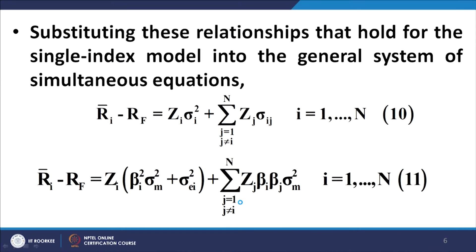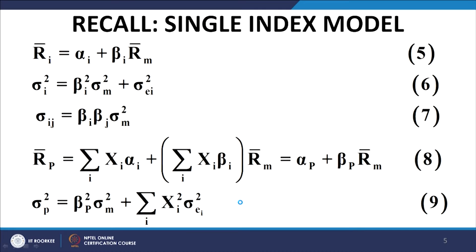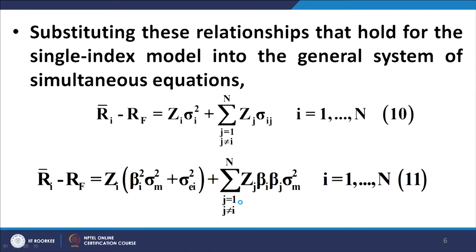Substituting these relationships that hold for the single index model into the general system of simultaneous equations, we get equation number 11. When we substitute equation number 6 into equation number 10, σ_i² is replaced by β_i² σ_m² + σ_{ei}² and the covariance term σ_{ij} is replaced by β_i β_j σ_m², which is equation number 7. Here we are injecting the single index model into our analysis.